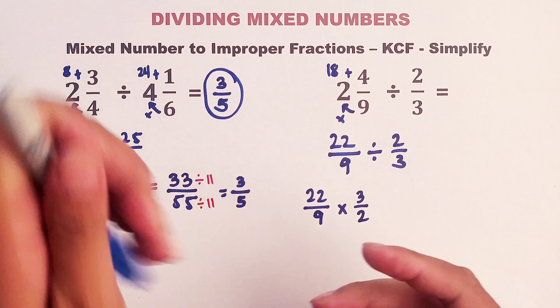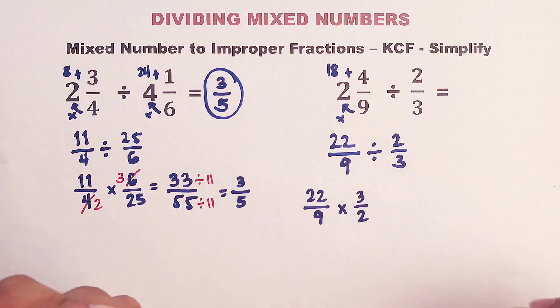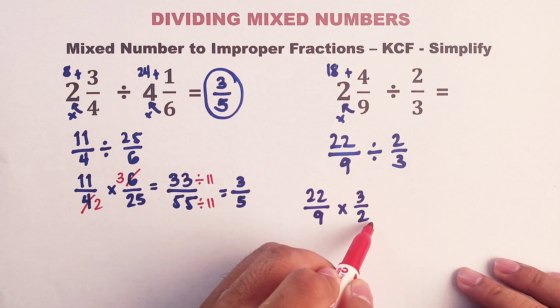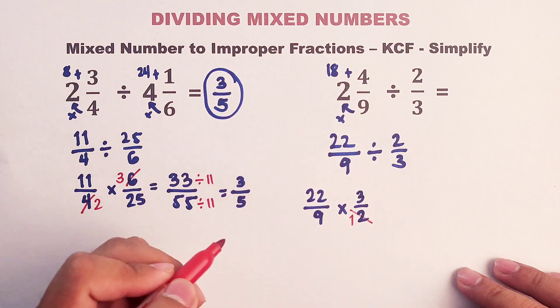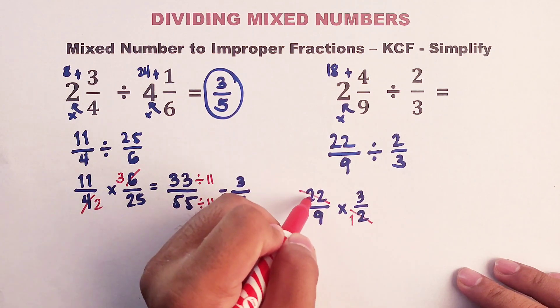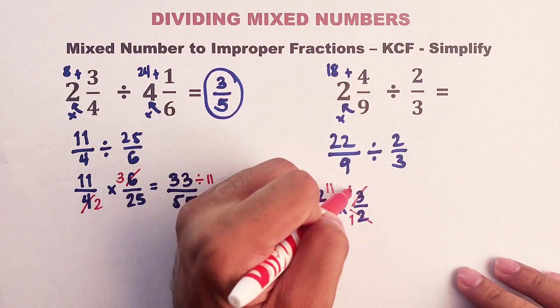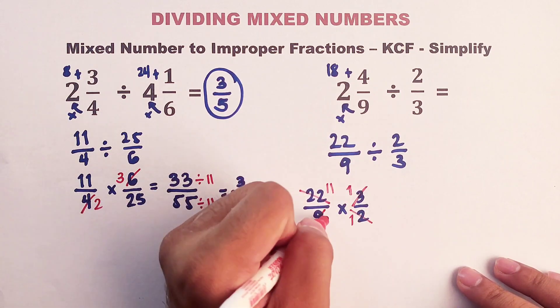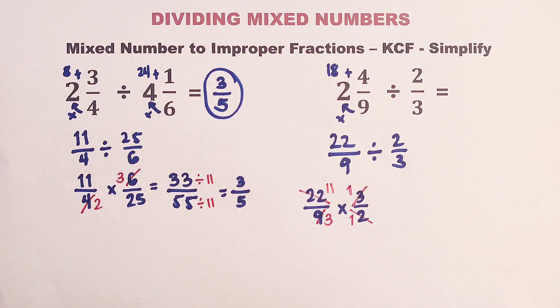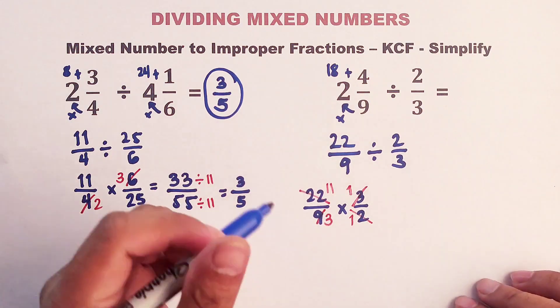Now by inspection, we can also use cancellation here. Let's start with the 2 we have here. It will become 1. And 22 can become 11. Now for 3 and 9. This will become 1. And this will become 3. And as you can see, we can directly multiply the numbers. And it's much smaller compared before.